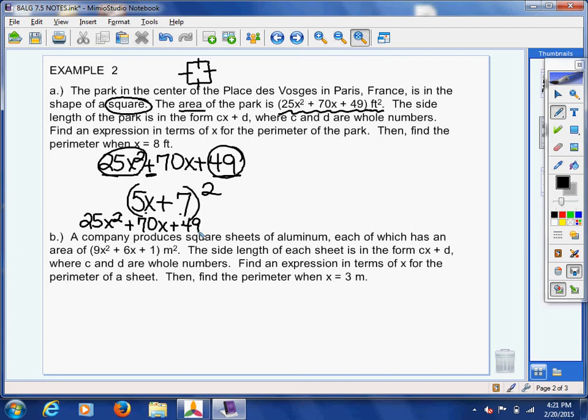So, I factored it. I did that part. Now, they want me to find an expression in terms of x for the perimeter of the park. Now, remember, 5x plus 7 squared, that is length times width. So, the length is 5x plus 7, and so is the width. That's all that says.